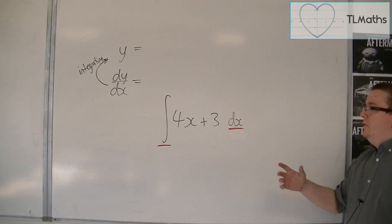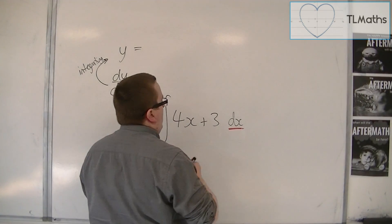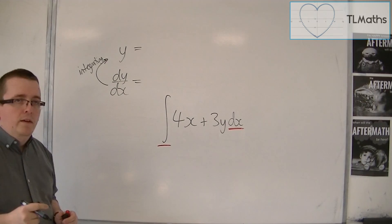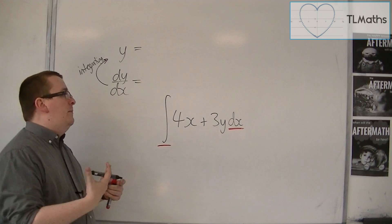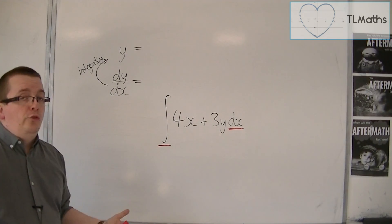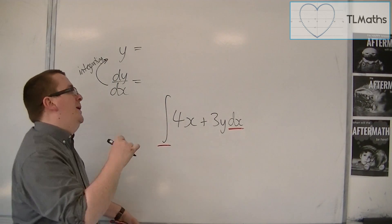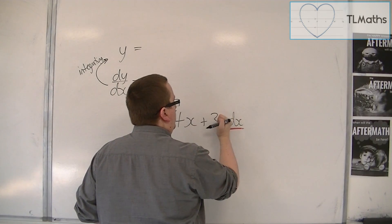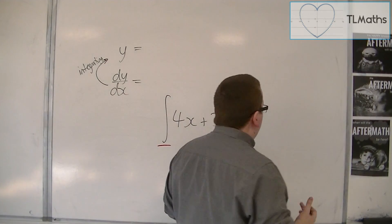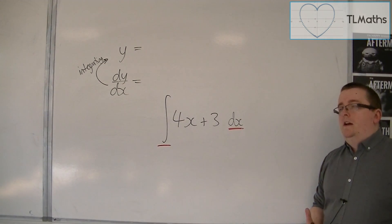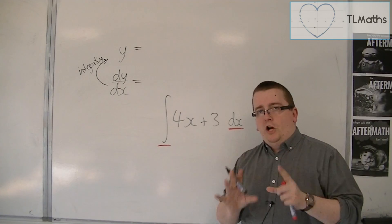The reason why we have 'with respect to x' is because I could effectively have another letter in there, in which case I need to be told which one I'm integrating by — am I integrating with respect to x, or with respect to y? Now, in none of the examples at this level do we look at more than one variable being there, so it may feel a little bit redundant, and that's why you might get into the habit of missing the dx out. But do not — don't leave it out.